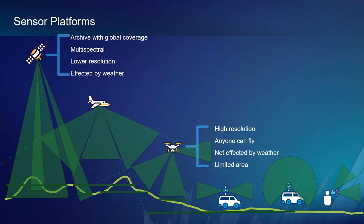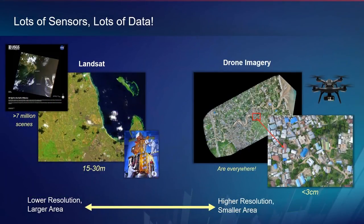Drones, on the other hand, provide very high resolution imagery. Pretty much anyone can fly one if they've got a few hundred dollars, and they'll be able to capture high resolution imagery and create high resolution information products. They're not really affected by weather — you can fly them under cloud cover, for example. You might have to do some normalization for different weather conditions, but you're still going to be able to measure frequencies coming from the Earth. However, one disadvantage of drones is that you're limited in the area you can capture. Theoretically you could send up a whole fleet and record over a large area, but then we get into issues of data constraints.